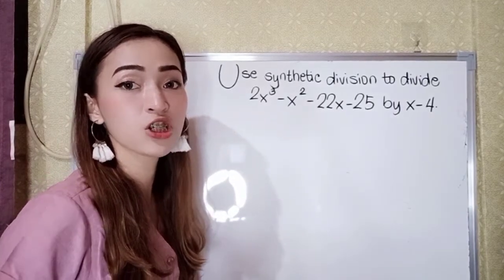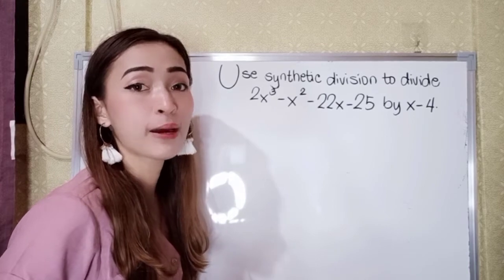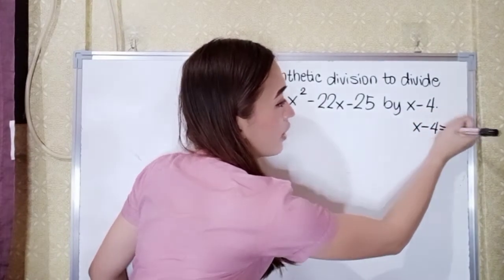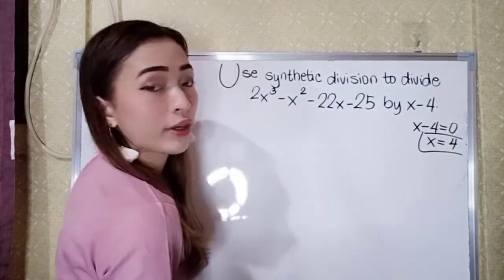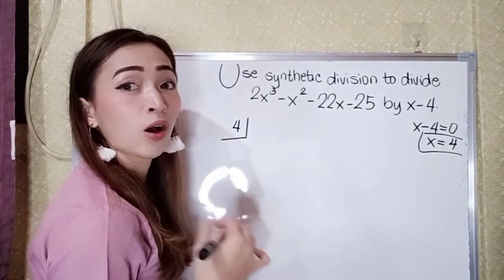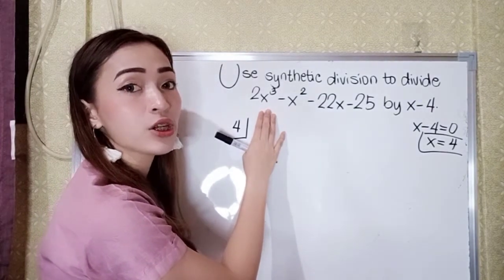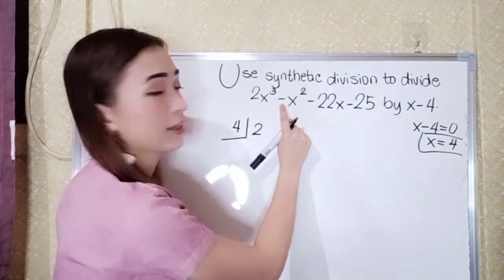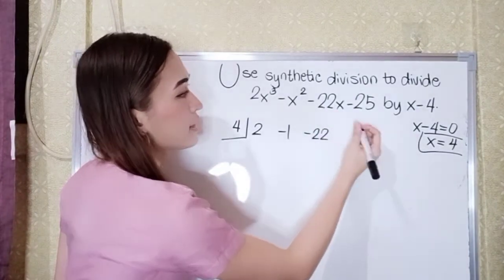For the next example, use synthetic division to divide 2x cubed minus x squared minus 22x minus 25 by x minus 4. Our divisor: equate x minus 4 to 0, so x equals positive 4. The numerical coefficients are 2, negative 1, negative 22, and negative 25.